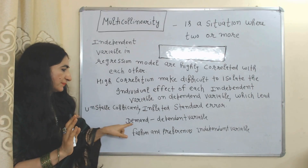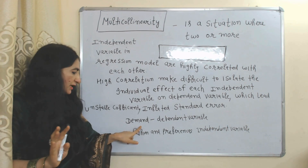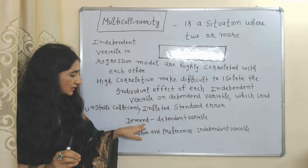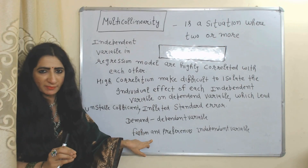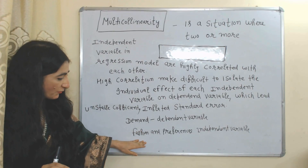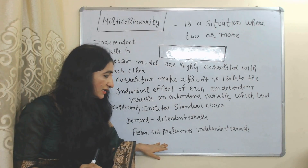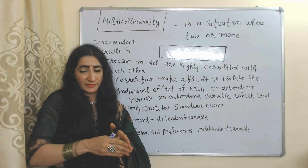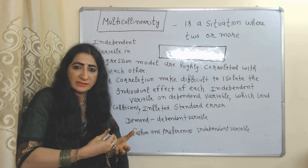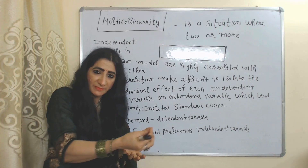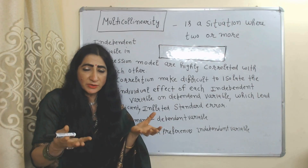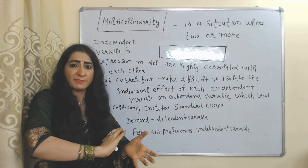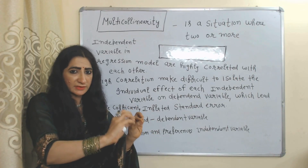For example, suppose demand is the dependent variable, and fashion and preferences are independent variables. Demand depends on fashion and preferences. But fashion and preferences are highly correlated with each other — our preferences are influenced by fashion, and individual preferences also shape fashion. So we can say fashion and preferences are highly correlated with each other.